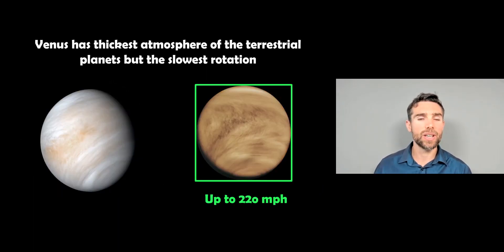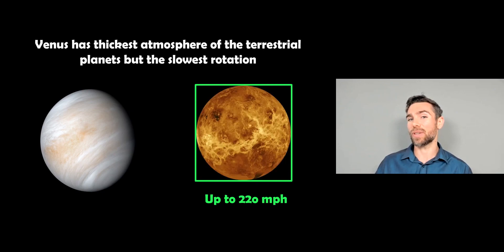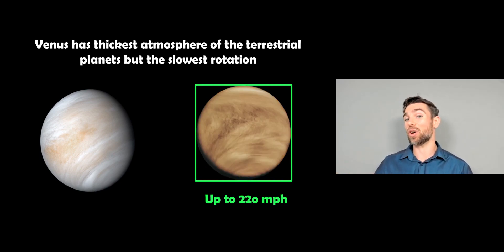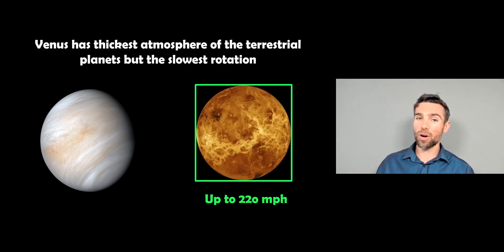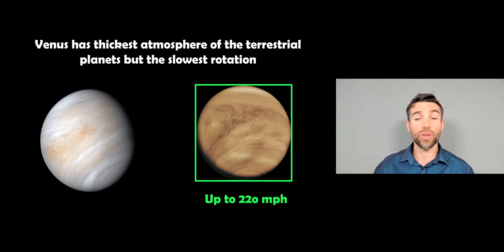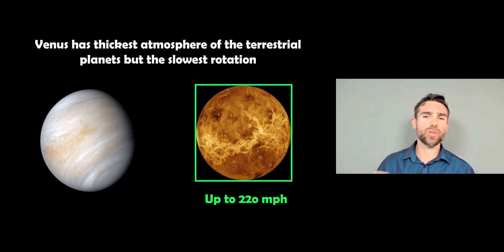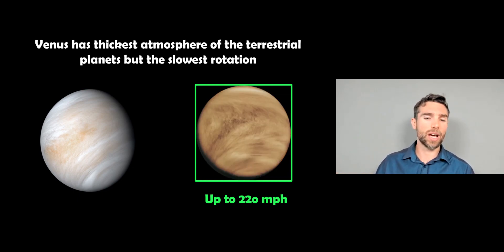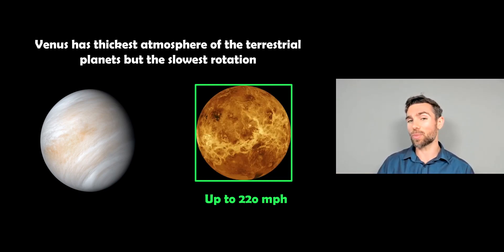Then we're going to go to Venus. Venus has the thickest atmosphere or the most significant atmosphere of the terrestrial planets. So the terrestrial planets are your inner ones: Mercury, Venus, Earth, Mars. These are terrestrial planets or smaller kind of rocky ones, and this has wind speeds up to about 220 miles per hour. So this is considerably more than Mars, but it's still actually quite slow when we think about the one that has the highest wind speed in the solar system. It also slowly rotates as well, but it does have wind speeds up to 220 miles per hour.